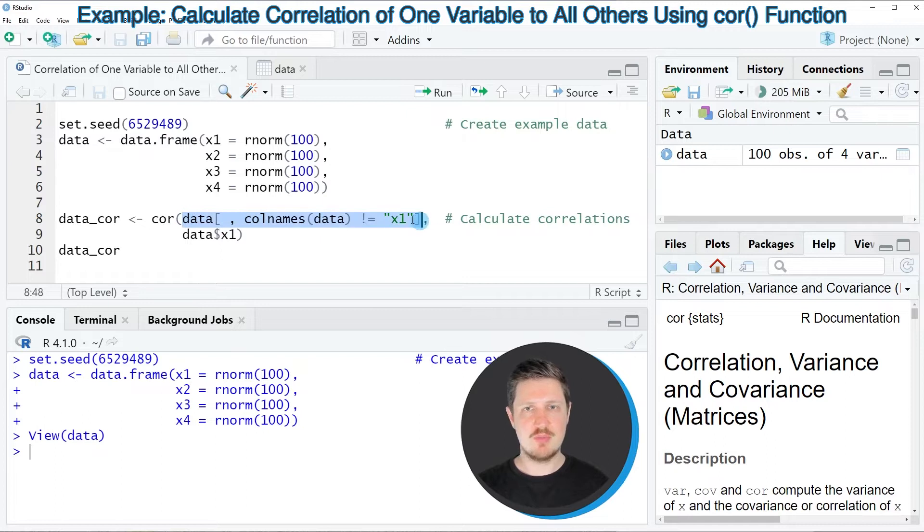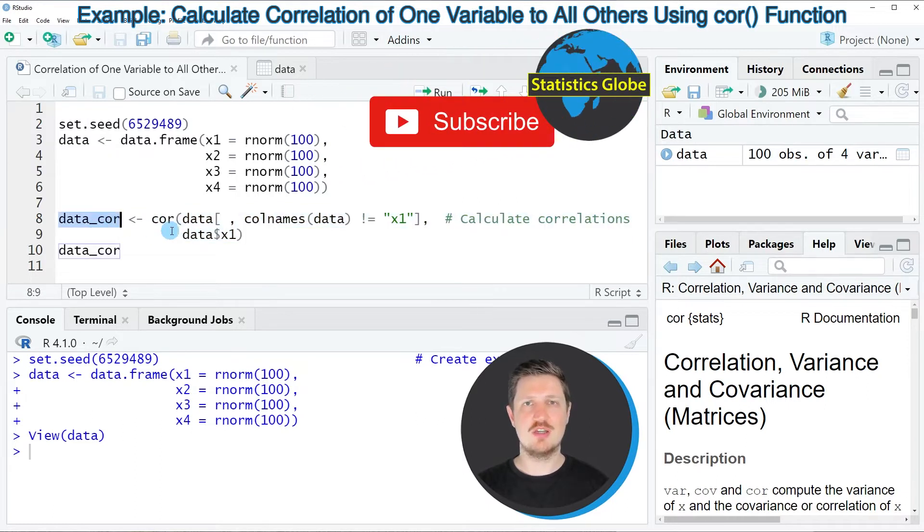In the first part of the cor() function, we are removing all columns except the column x1. Then in the second part of the cor() function, separated by a comma, I'm specifying the column x1. Then I'm storing the output of the cor() function in a new data object that I'm calling data_cor.